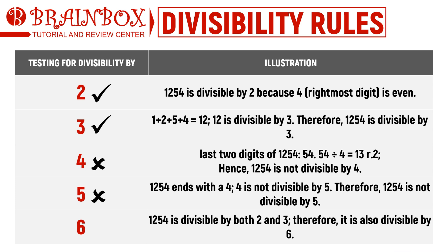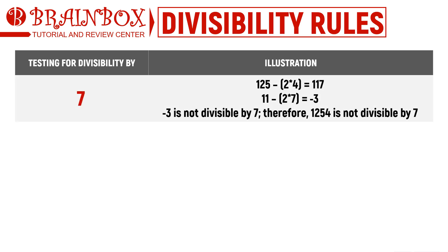However, 1,254 is divisible by 6, since we have already identified 2 and 3 as factors. Checking for divisibility by 7: we take double the last digit 4, which results in 8, and subtract it from 125, giving us 117. Since the divisibility of 117 by 7 is not yet apparent, we repeat the process. We subtract double the last digit 7, which results in 14, from the rest of the number 11, leaving us with −3, which is not divisible by 7. Therefore, 1,254 is not divisible by 7.